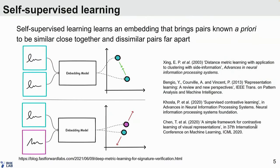The technique I'm using is from the field of self-supervised learning, which is a discipline in machine learning. Self-supervised learning learns an embedding that brings pairs that are known a-priori to be similar — for example, two pictures of a handwritten signature — close together, while leaving samples that are dissimilar far apart. It's been widely successful in fields like image processing and natural language processing.